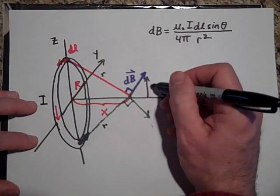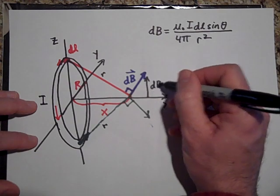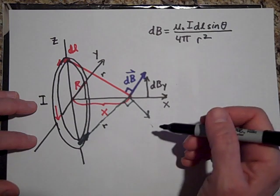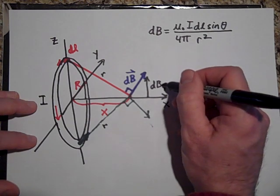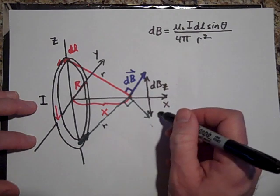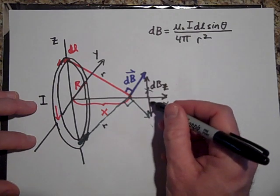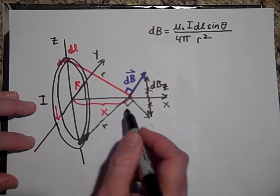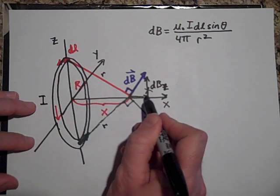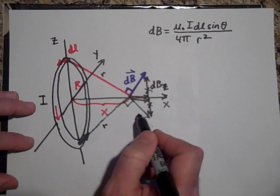So like this part, dB say y in this case, or z rather, that's dBz. Yeah, dBz is going to cancel with this one. That dBz. So those are going to cancel. And what you're going to be left with is just for these two, at least, is you're going to just be left with the x components. In fact, you're going to be left with the x components for all of them.